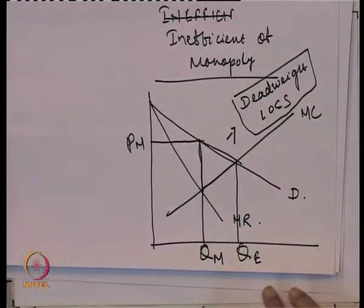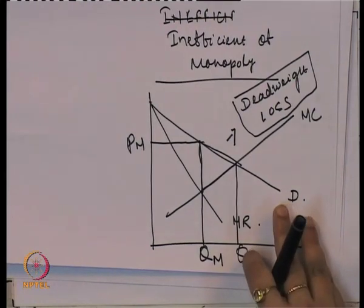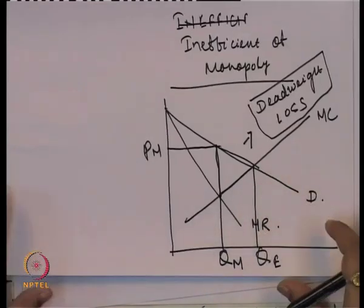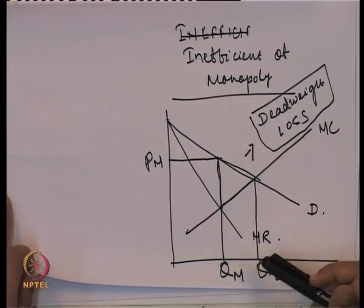Monopolists are not operating at the efficient level of output, which leads to a cost to society in the form of deadweight loss. Deadweight loss arises because of the difference between the efficient quantity and the monopoly quantity. The monopoly quantity is always lower and at a higher price, while the efficient quantity involves higher output at a lower price. Some amount of inefficiency with respect to output and price imposes a social cost on society.